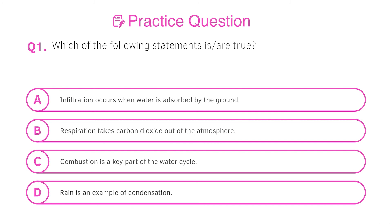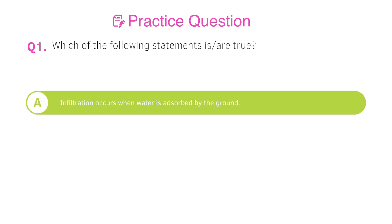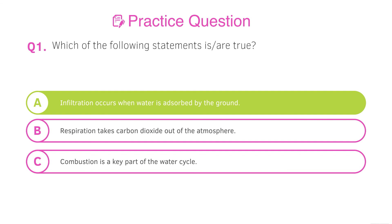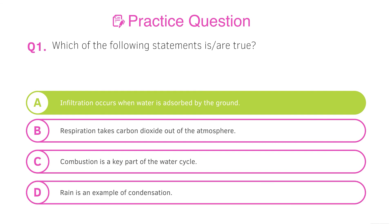Okay, so here we go. A is indeed true. Infiltration occurs when water is absorbed by the ground, it might then be stored within aquifers. B, respiration takes carbon dioxide out of the atmosphere. So false, it adds carbon dioxide to the atmosphere. C, also false, combustion is a key part of the carbon cycle. And D is absolute nonsense, so that's also false.